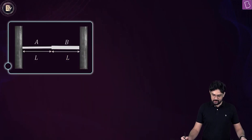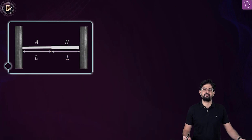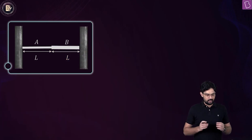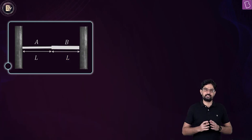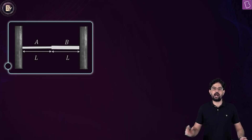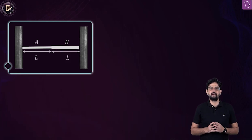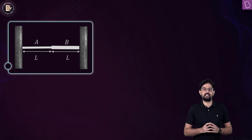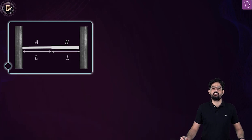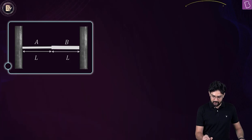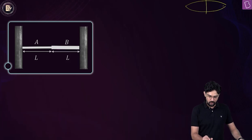Let's focus on wire A. You can imagine this wire as a wire fixed at both ends and vibrating in its p-th harmonic. How can I claim this? Because it has been given that there are P number of antinodes formed on this wire. Think about a wire fixed at two ends vibrating in its fundamental mode — in that case, how many antinodes are there? One.